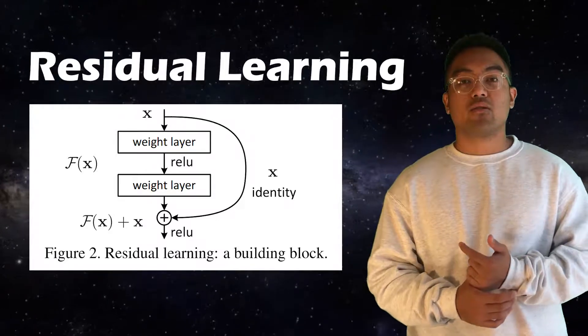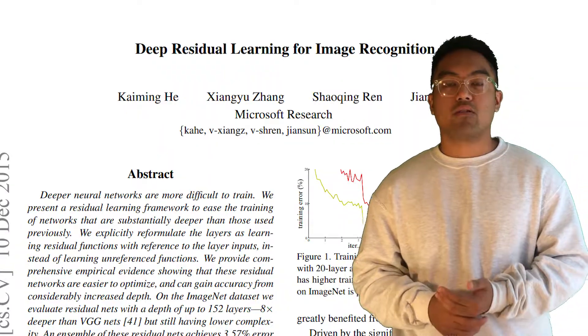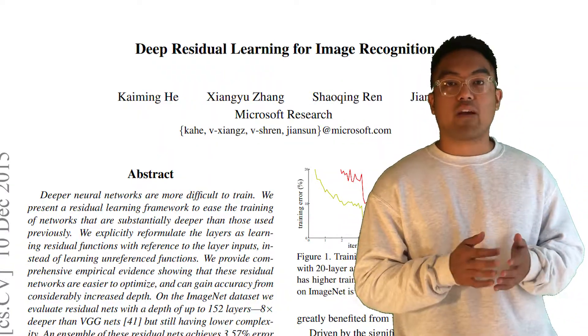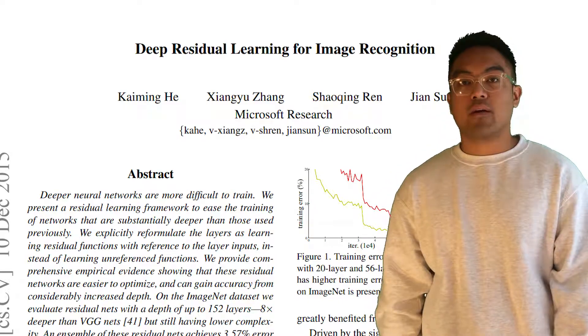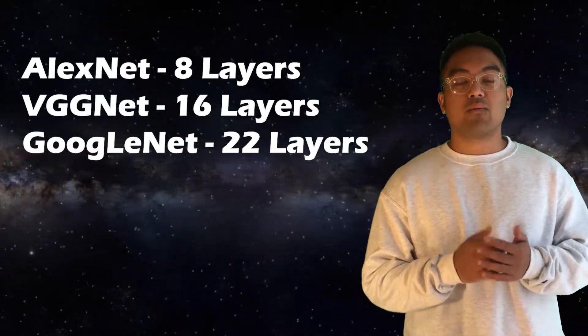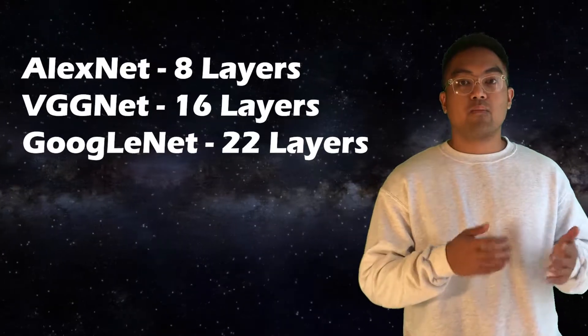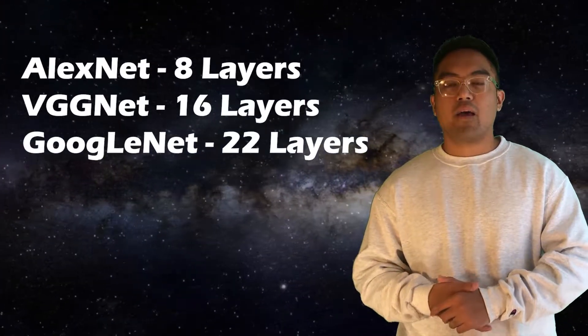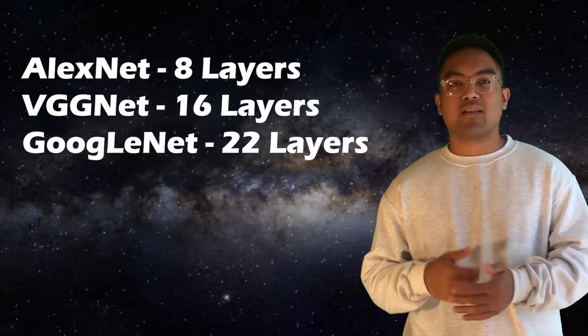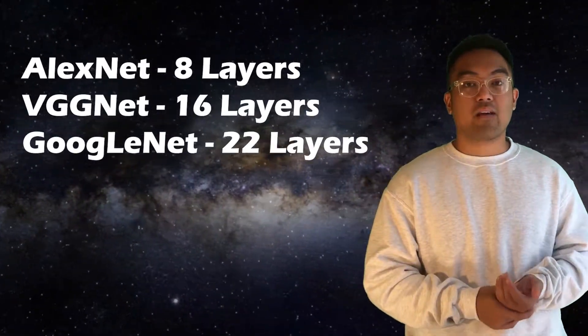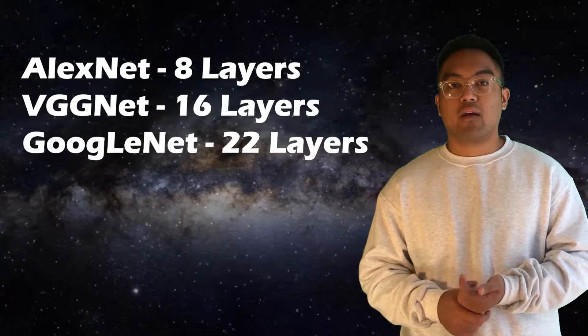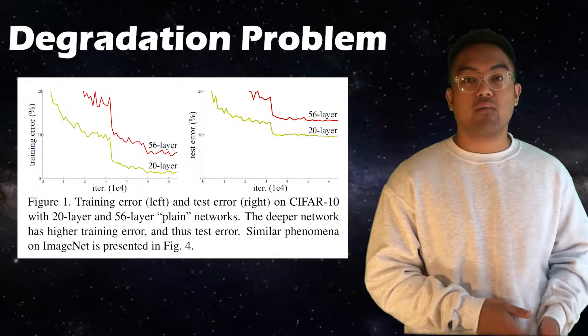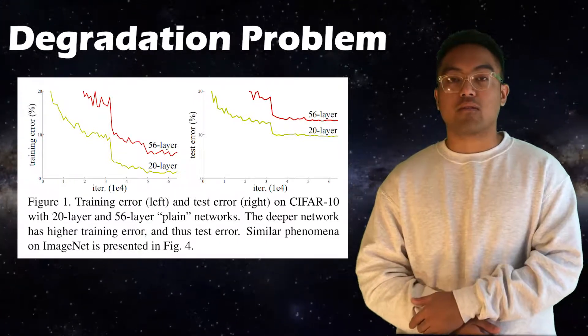Deep residual learning was introduced by He et al from Microsoft Research, and it enables us to train very deep neural networks. The motivation comes from the observation that deep neural networks were performing a lot better on image recognition tasks, but we found that it wasn't as simple as just adding another layer to your neural network. For a sufficiently deep model, adding another layer can actually introduce a degradation problem, and your performance can start to suffer.